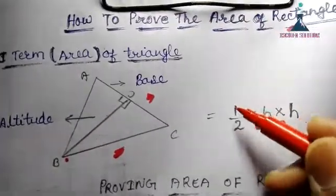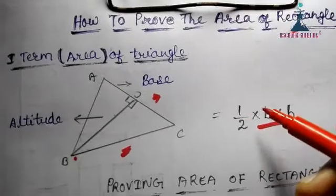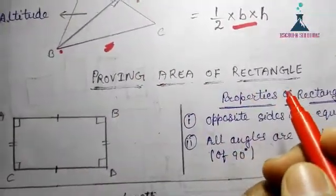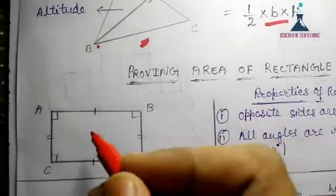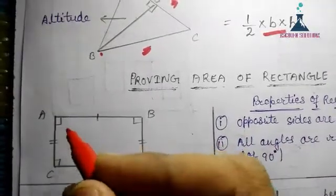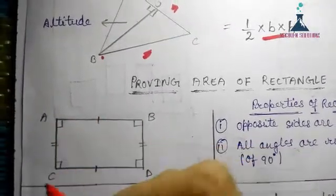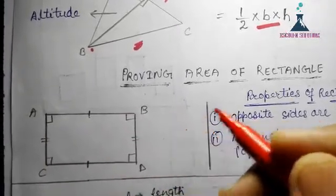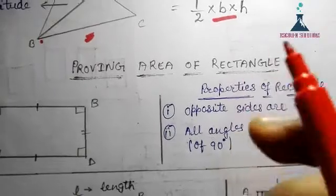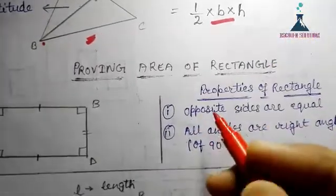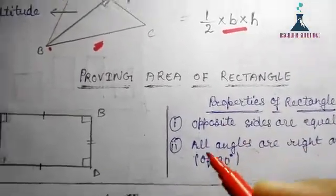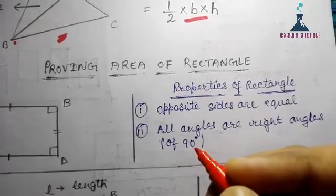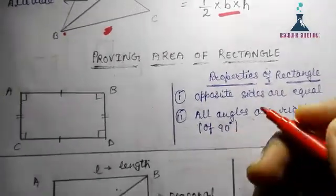So the area of a triangle is half into base into height. Now let's move forward to proving the area of a rectangle. As you can see, this is rectangle ABCD. Two important properties to keep in mind: opposite sides are equal, and all angles are right angles — that is, 90 degrees.